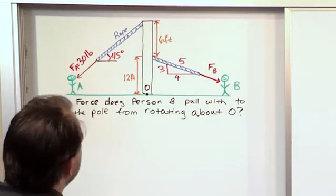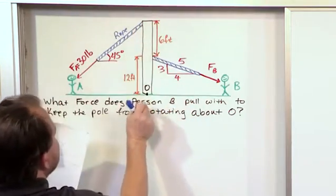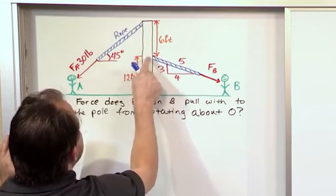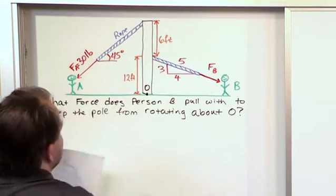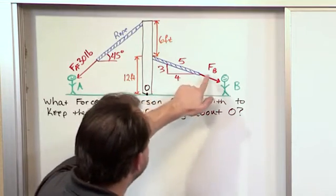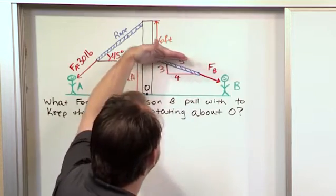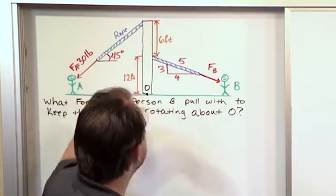I drew this pole kind of fat, but I need you to think about it as infinitely thin or really thin pole here. So there's really no distance between where this rope attaches and where this rope attaches, horizontal distance anyway. And then this force pulling with unknown force B can be thought of as a horizontal force this way and a vertical force going down.